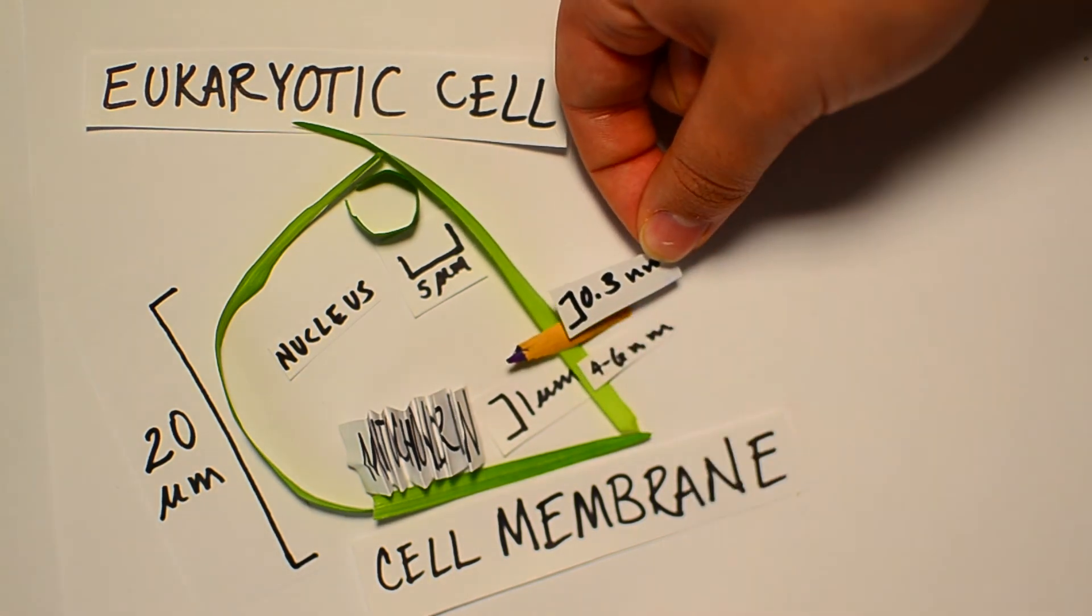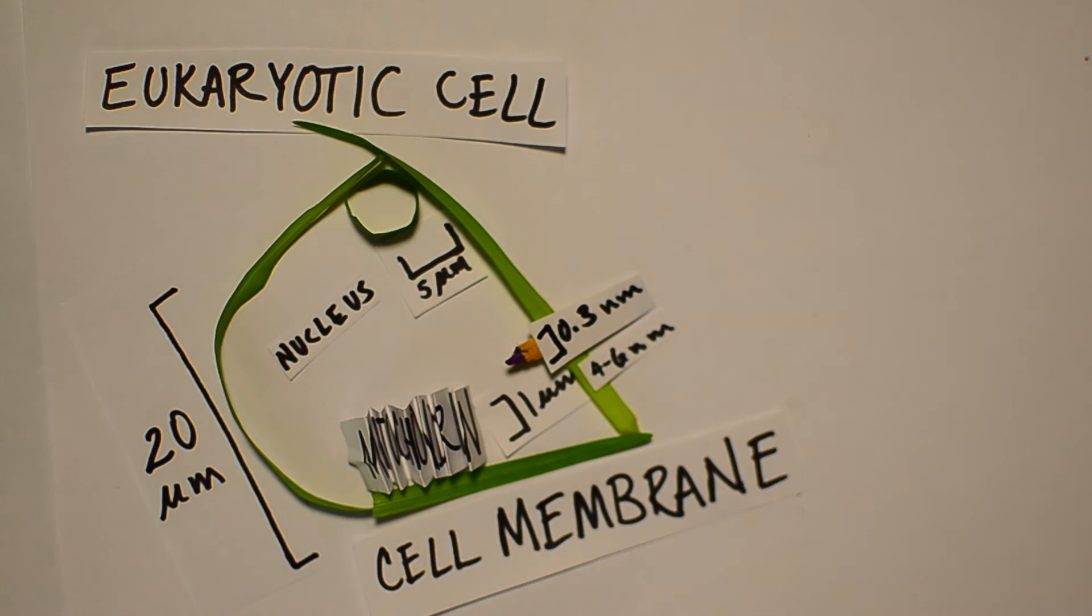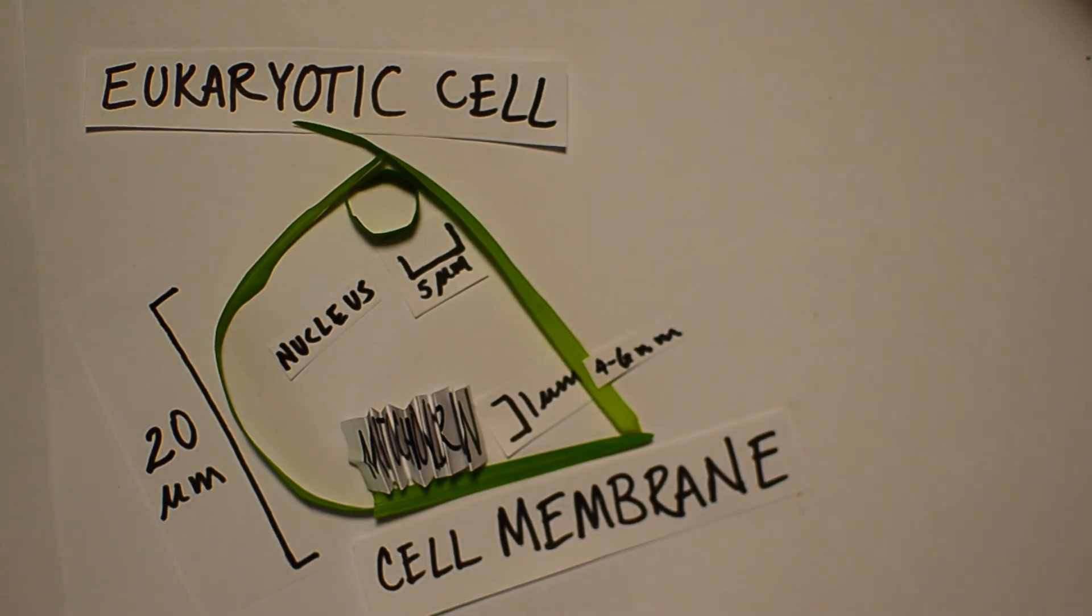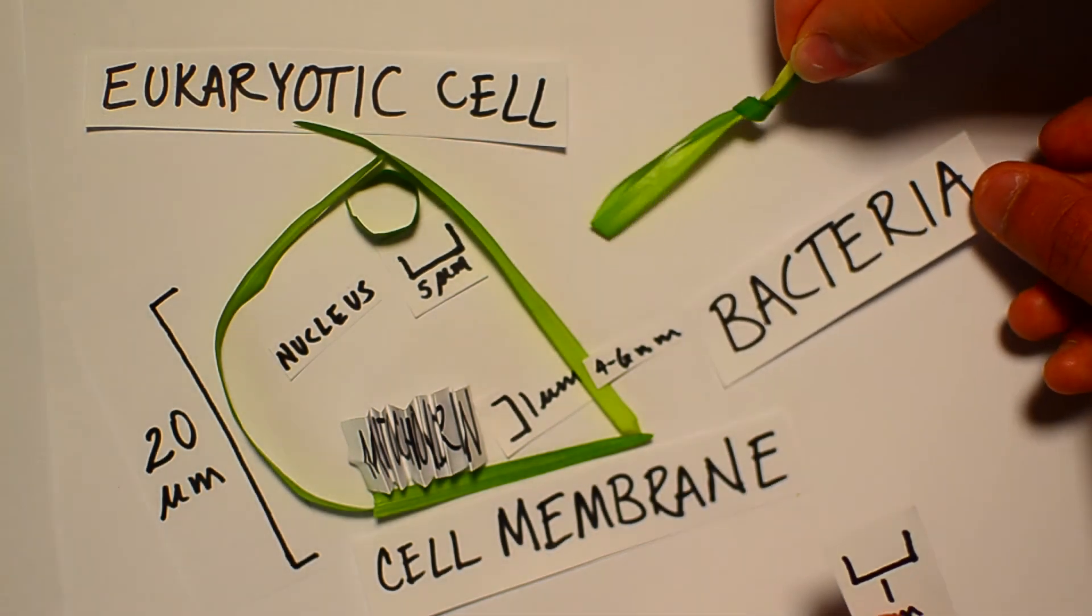Now that we know the size of the cell, the width of the membrane, and the size of a bacterium, thanks to the use of quantitative approaches in biology, it's obvious that the bacterium will be incapable of entering the cell if it were to try.